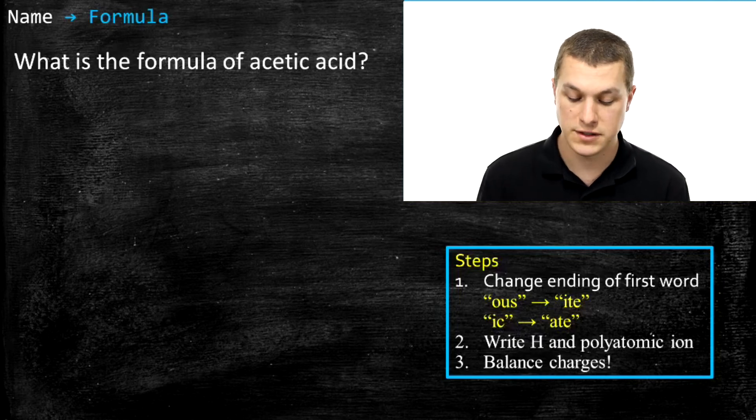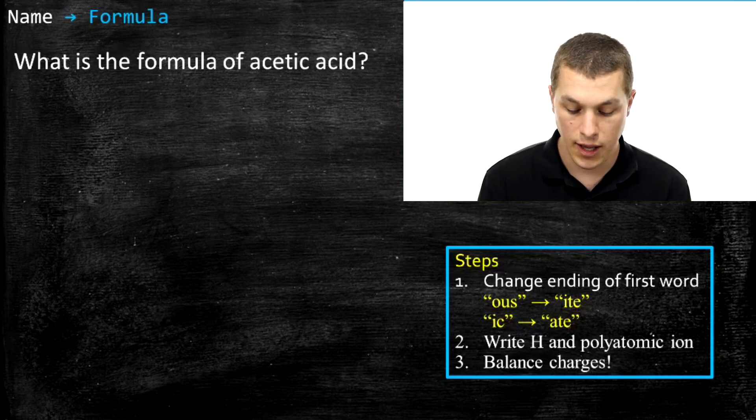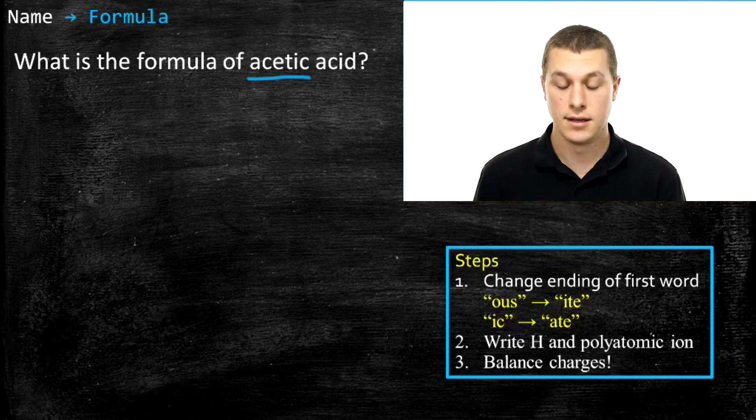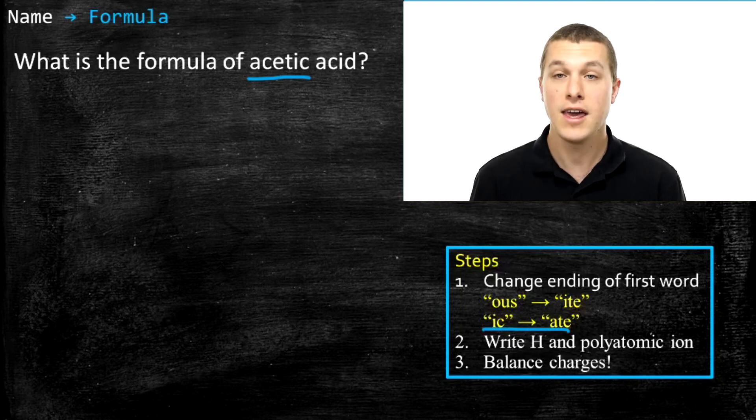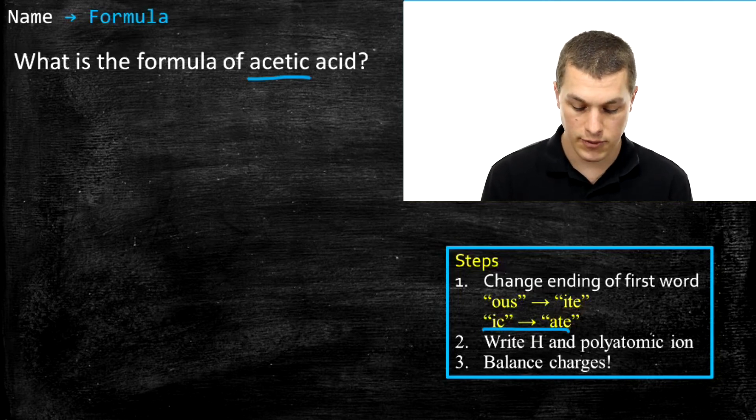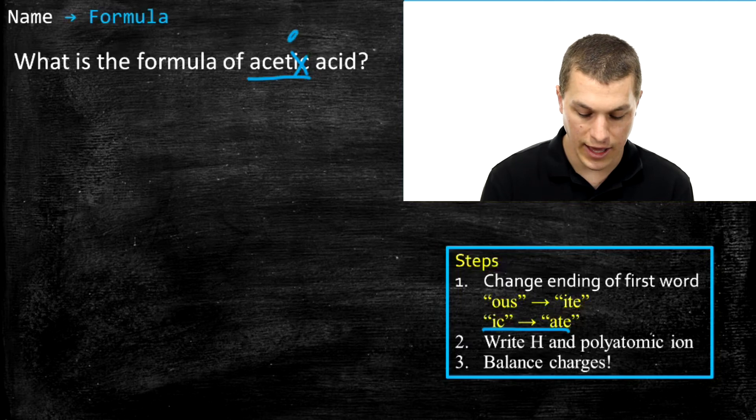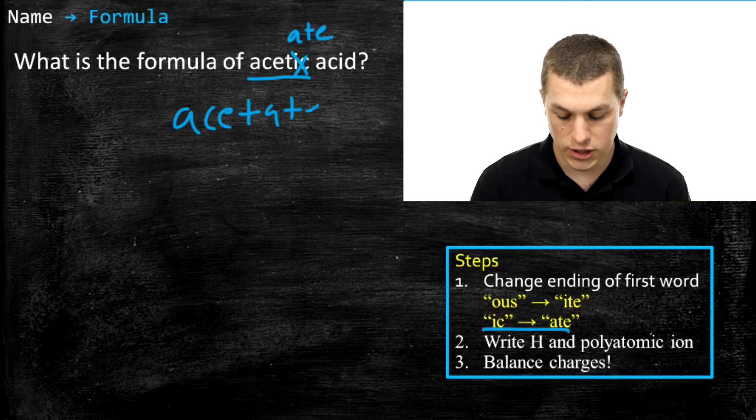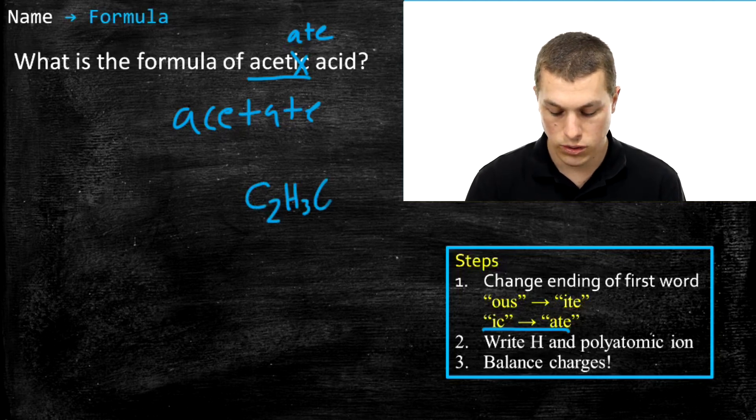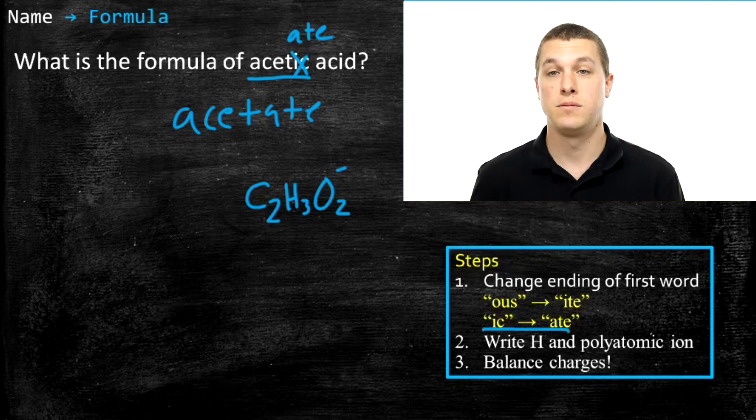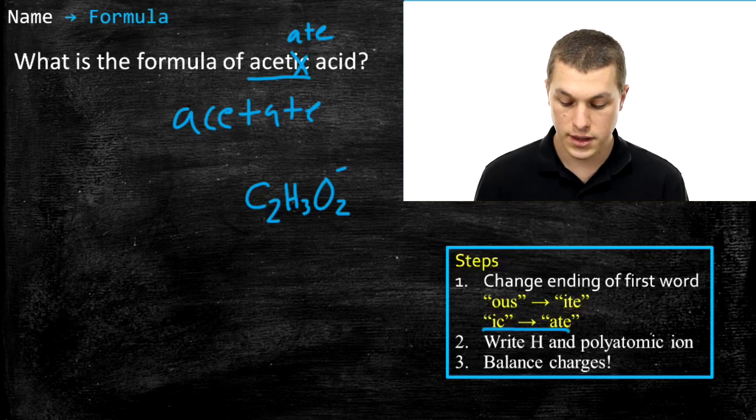Well, doing this process backwards basically just means we should identify what our polyatomic ion is. In this case, we can see that our polyatomic ion has been turned into the word acetic. And so if I want to know what that was, what I need to do is drop the -ic and put back on the appropriate ending. And you can see from our rules down here that if I have -ic, I should go back to -ate. So I'm going to get rid of -ic and instead write -ate. So that becomes acetate. Now, here's where you need to know your polyatomic ions once again. I need to know that acetate turns out to be C2H3O2. And it has a charge of negative 1. That charge is important.